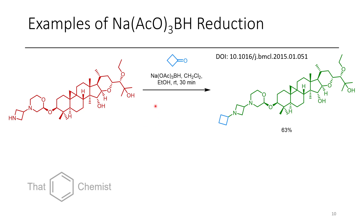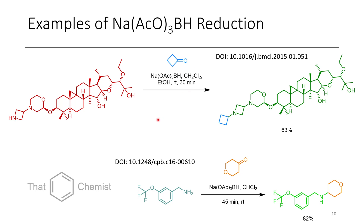Some examples of sodium triacetoxyborohydride-mediated reduction include the functionalization of a steroid derivative with plenty of functional groups — ethers, a hemiacetal, a tertiary amine — all of which are tolerated, and conversion proceeds in half an hour even with a cyclobutanone. Another example is the conversion of benzylamine with cyclohexanone to a secondary amine product. This works quite well.